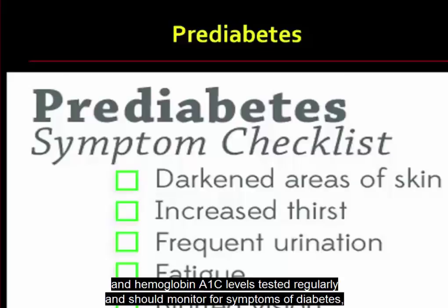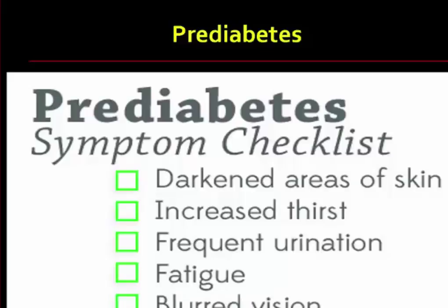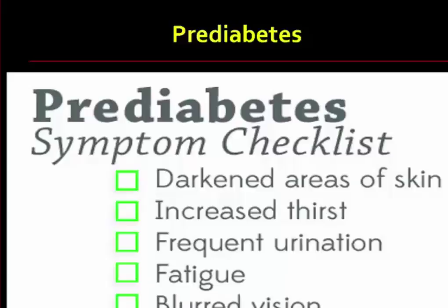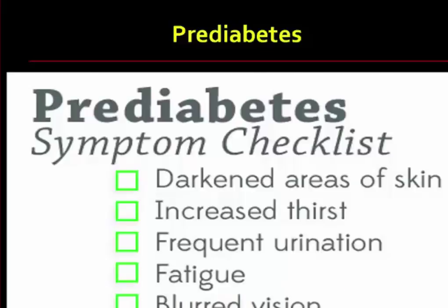Those with prediabetes should have their blood glucose and hemoglobin A1C levels tested regularly and should monitor for symptoms of diabetes such as polyuria, polyphagia, and polydipsia. Maintaining a healthy weight, exercising regularly, and eating a healthy diet have all been found to reduce the risk of developing prediabetes.